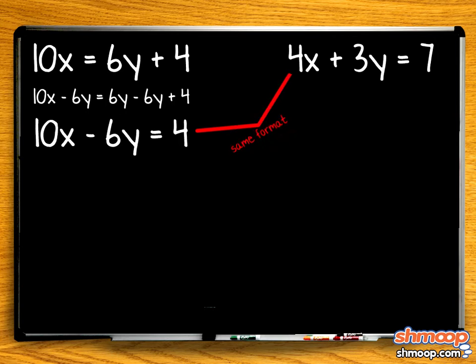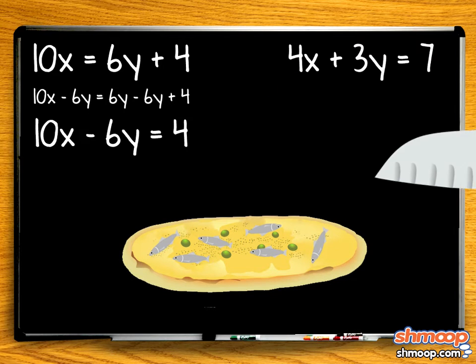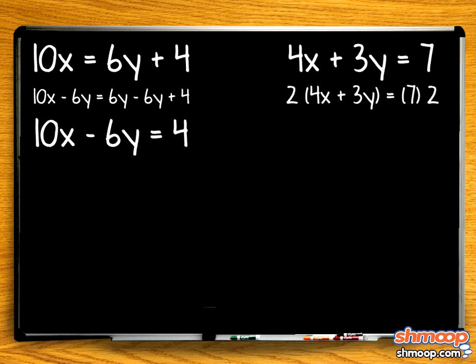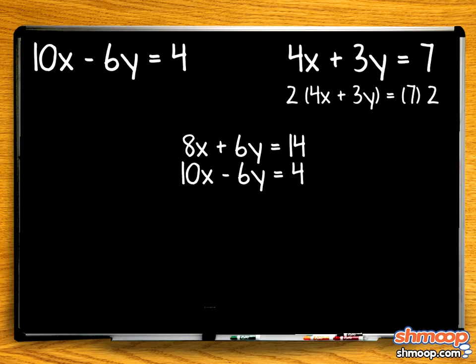In order to eliminate a variable, kinda like you probably eliminate anchovies from your pizza, we'll double all the values in Julius' equation, leaving us with 8x plus 6y equals 14. Because both equations have 6y in them, we can add these two together to eliminate the variable y.